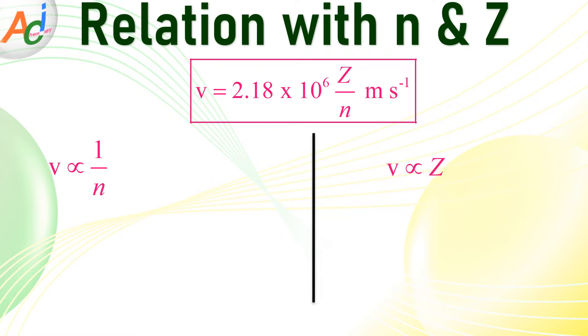For a given atom, the ratio of velocities of electrons in the first and second Bohr's orbits is 2:1, indicating a decrease in the velocity as the distance from the nucleus increases.